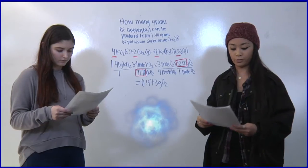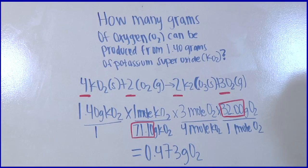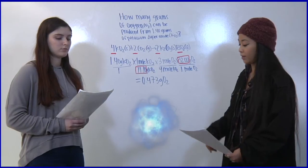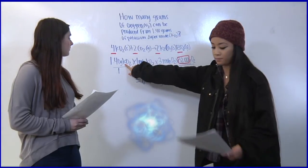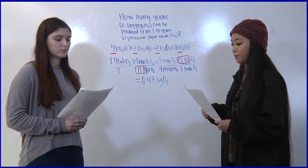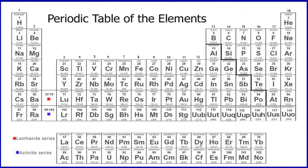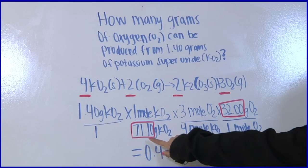Once that is done we'll go through the steps like we did in the previous equation. First we start with what's given, 1.40 grams. Then we look at the periodic table for potassium plus oxygen which we would get 71.10.